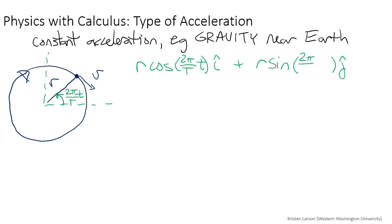If this is the position vector, let's call it r, then we can have a velocity vector. The velocity vector v is equal to the time derivative of r.